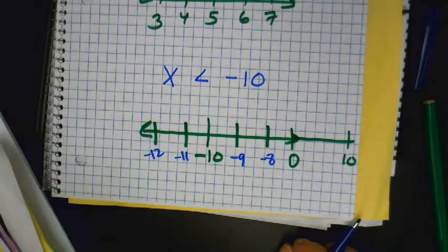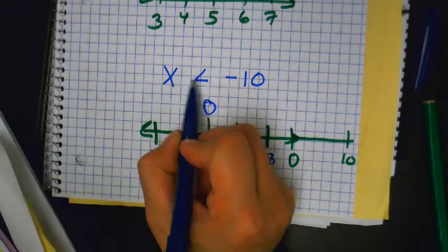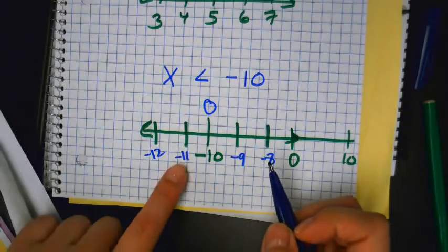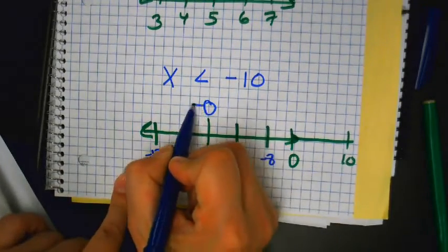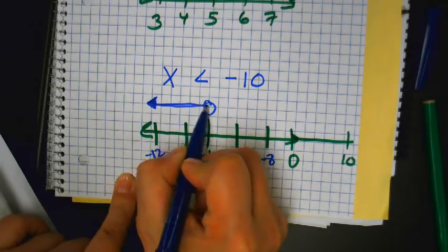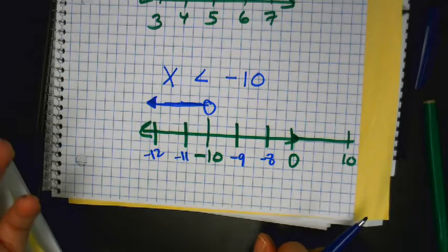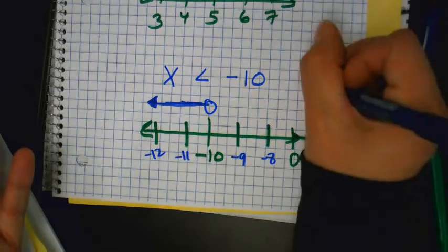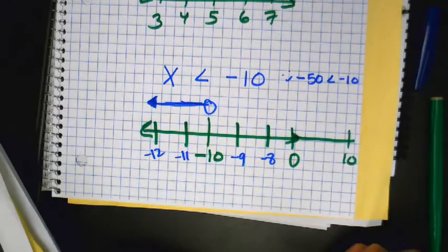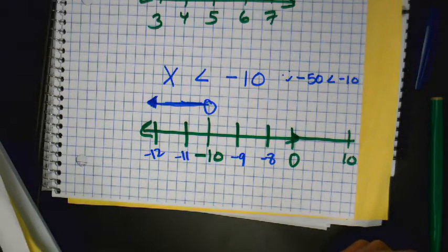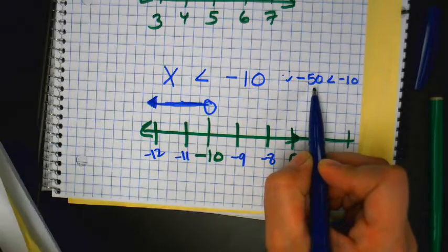Open or closed circle? Open — going to the left. Which numbers are less than negative 10? Negative 11, negative 12, negative 50. Everything in the negative land is backwards — negative 50 is less than negative 10. Even though 50 feels like a big number, negative 50 is smaller than negative 10.